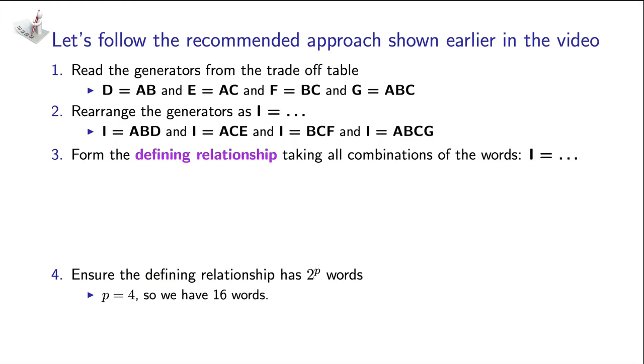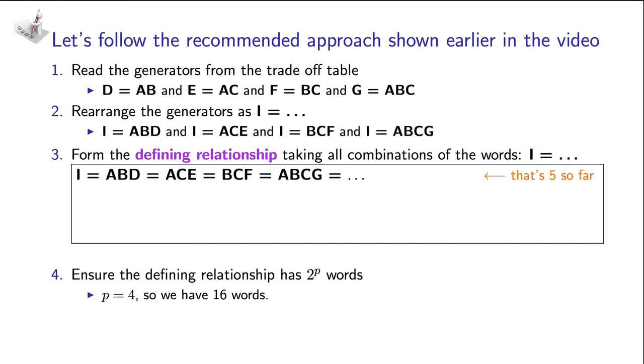Let's give it a try. The first few words are easy. Take the rearranged generators individually. I equals ABD equals ACE equals BCF equals ABCG. That's five of them. Now we can add to that the combinations two at a time. ABD times ACE, and that simplifies to BCDE. The next combination, two at a time, is ABD times BCF, and that equals ACDF. You can prove to yourself that those are the remaining four. Now we've got 11 words so far in our defining relationship.